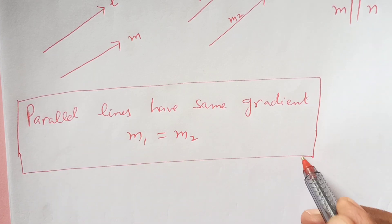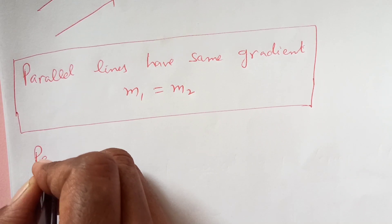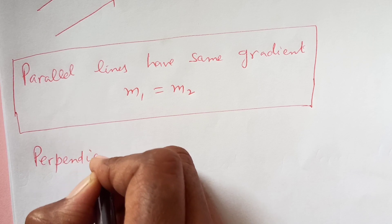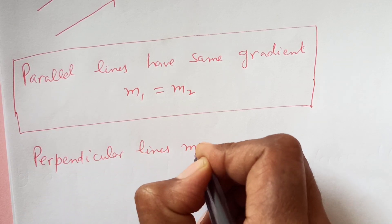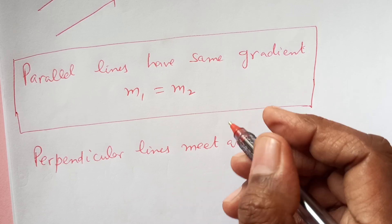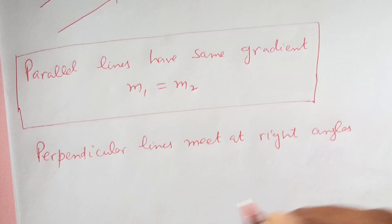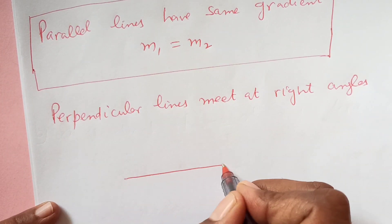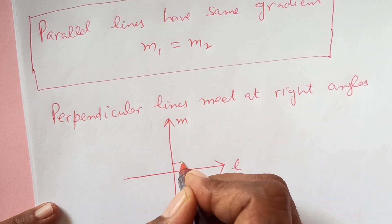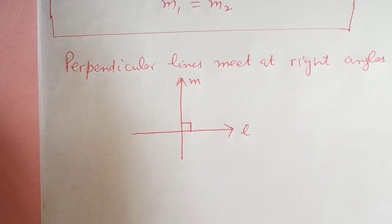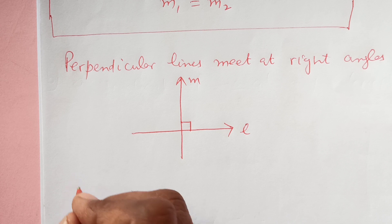Now, what are perpendicular lines? Perpendicular lines meet at right angles. Meaning to say, if we have line L and another line M here, and they meet each other at an angle of 90, then for that case, the product of the gradients is negative 1.